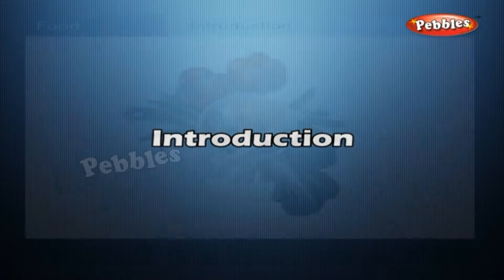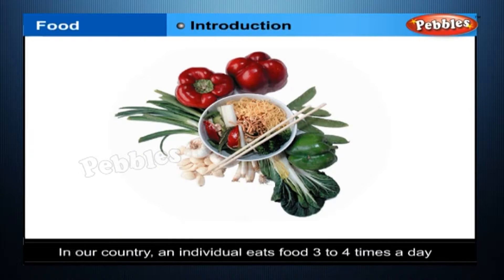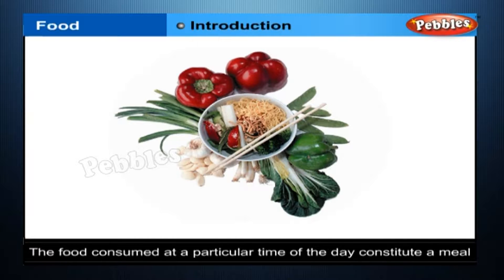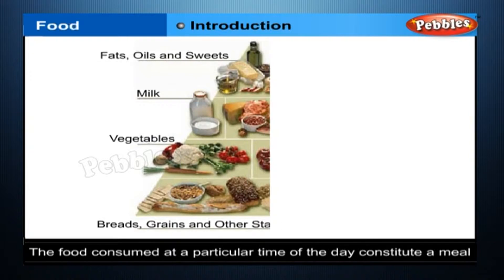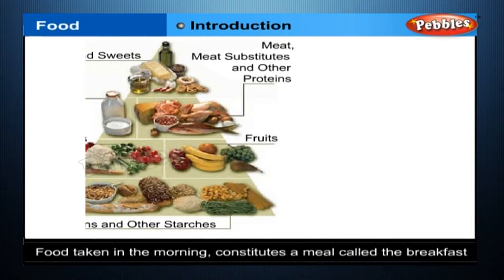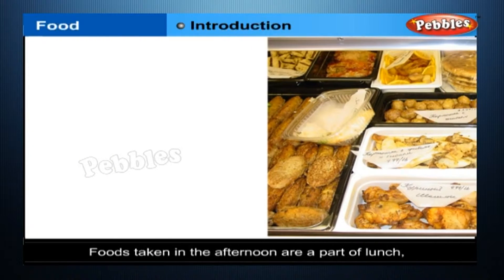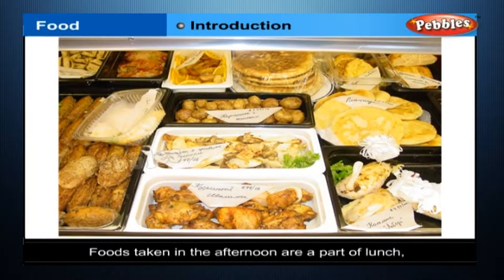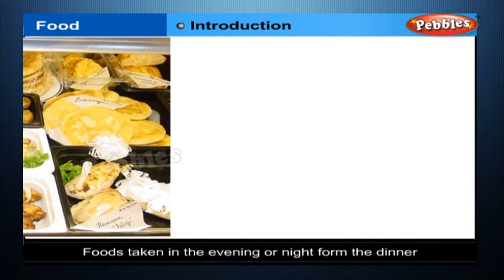Food. Introduction. In our country, an individual eats food three to four times a day. The food consumed at a particular time of the day constitutes a meal. For example, food taken in the morning constitutes a meal called breakfast. Similarly, food taken in the afternoon is a part of lunch, and those taken in the evening or night form the dinner.